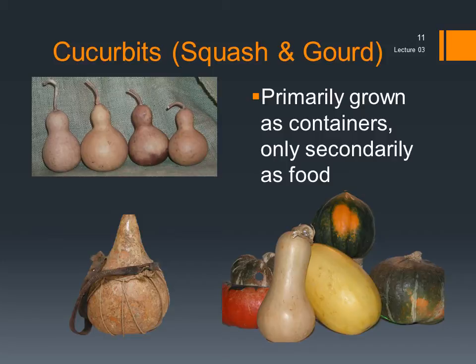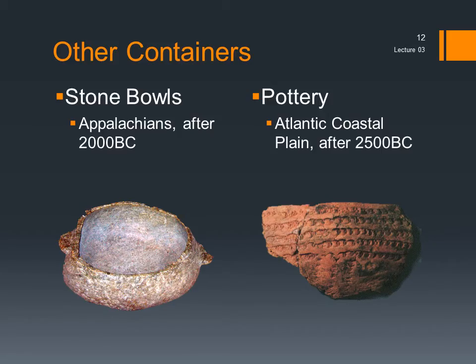We find remains of bottle gourd rinds in archaeological contexts in the Eastern Woodlands by about 5000 BC. Other, potentially more useful containers show up in various portions of the Eastern Woodlands during the Late Archaic. In the Appalachian uplands about 2000 BC, people began making groundstone steatite bowls. Along the Atlantic coast, the earliest pottery appeared about 2500 BC, but it was very low quality and did not expand much beyond the area until after 1000 BC, the beginning of the early woodland period. What these containers did for the Archaic peoples was allow them to gather, transport, store, and process a wider variety of foods more efficiently. With stone bowls and pottery, it was finally possible to put watertight containers directly over fires, and thus boiling was finally practical. Gourds were literally bottles that grew every summer, so there was never a shortage of containers.